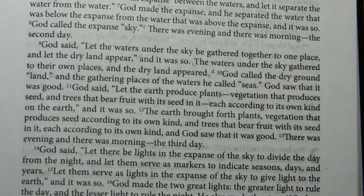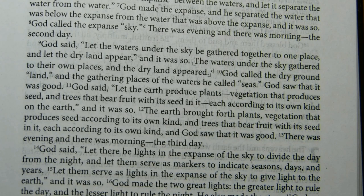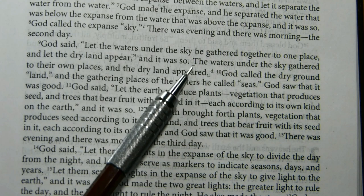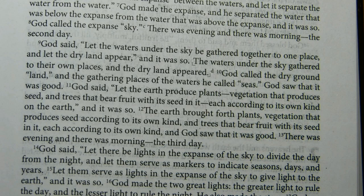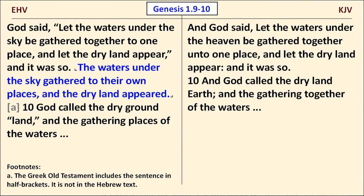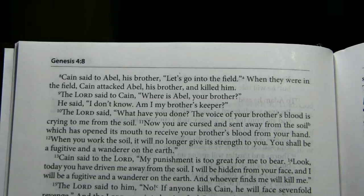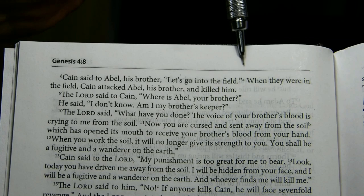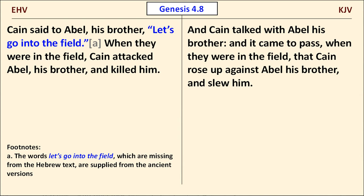Almost immediately upon beginning to read the EHV in the book of Genesis, you'll find additional material that's not in the King James Version. In verse 9, you'll see a sentence in brackets, and as the footnote says, this information is provided from the Greek Old Testament — the Septuagint — and is not in the Hebrew text. Another example appears in Genesis 4:8, where the EHV has Cain saying to his brother Abel, "Let's go into the field." The footnote explains that those words are missing from the Hebrew text but are supplied from ancient versions such as the Septuagint.